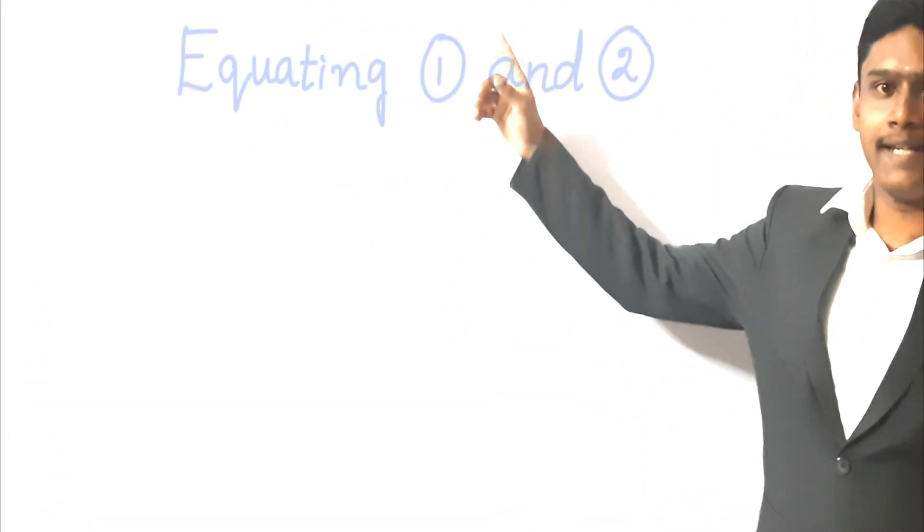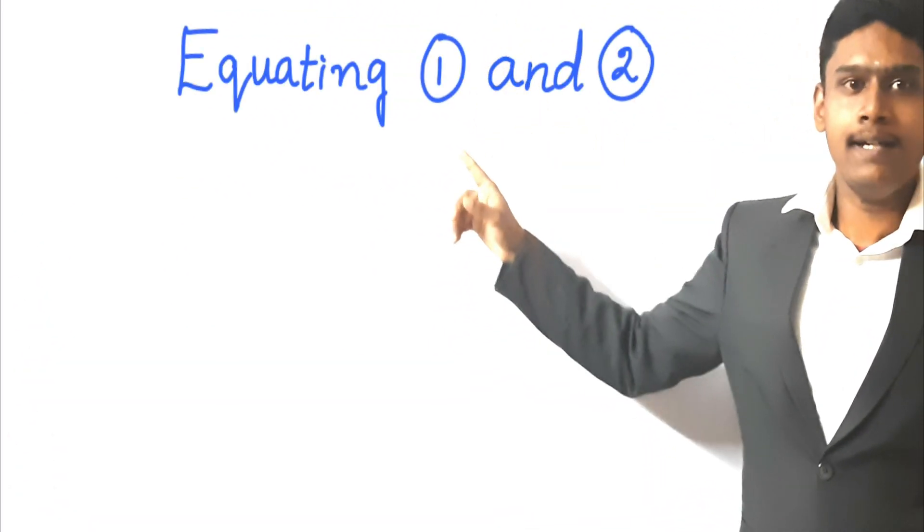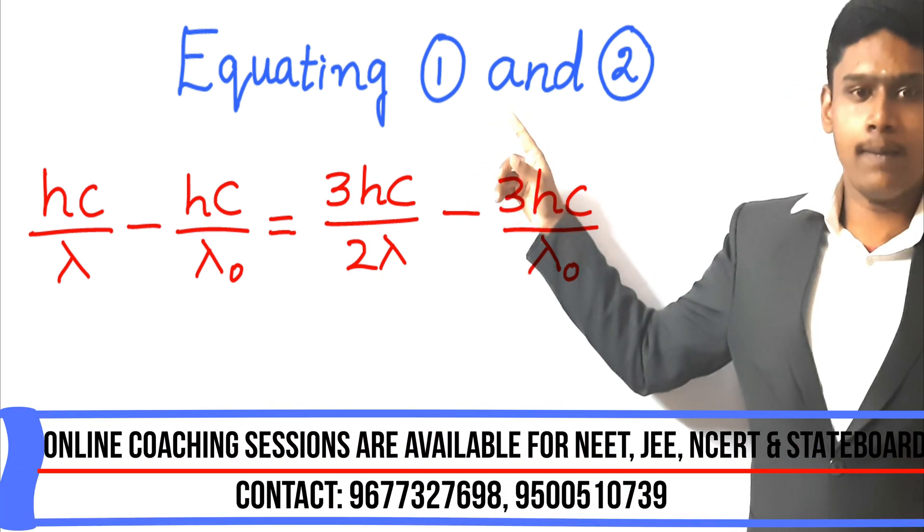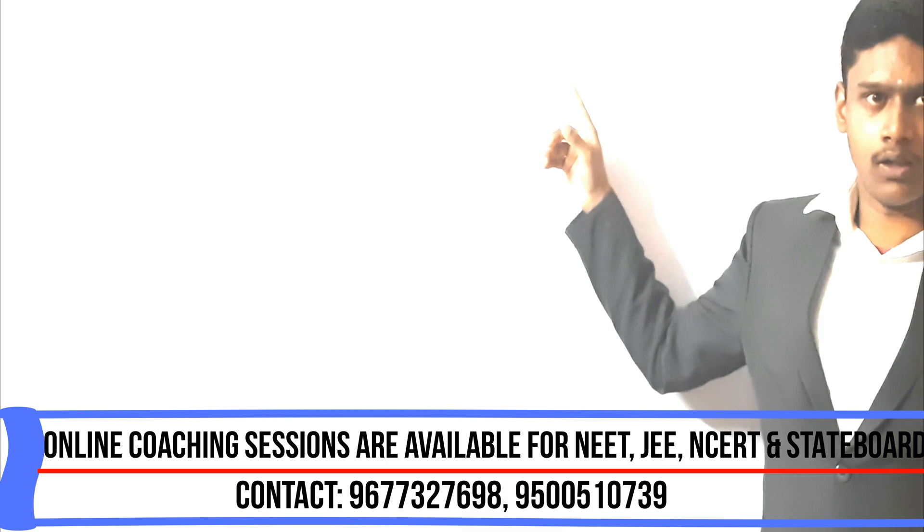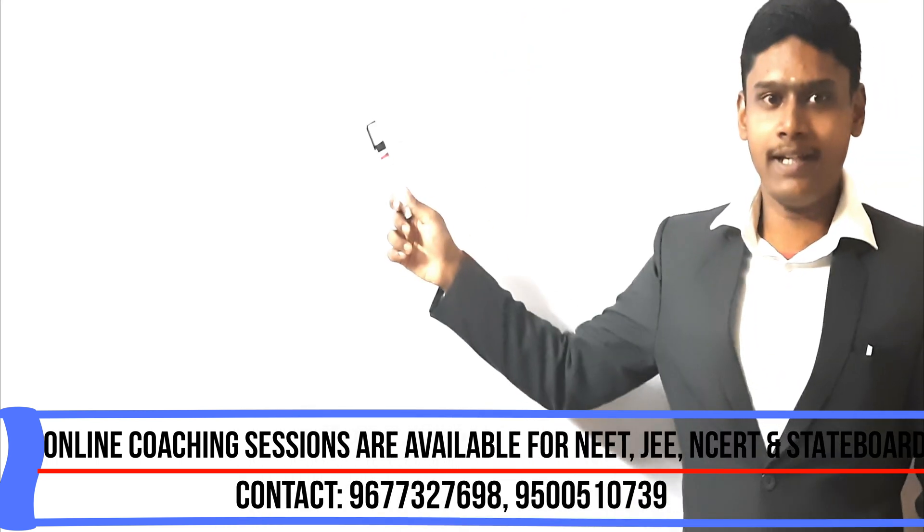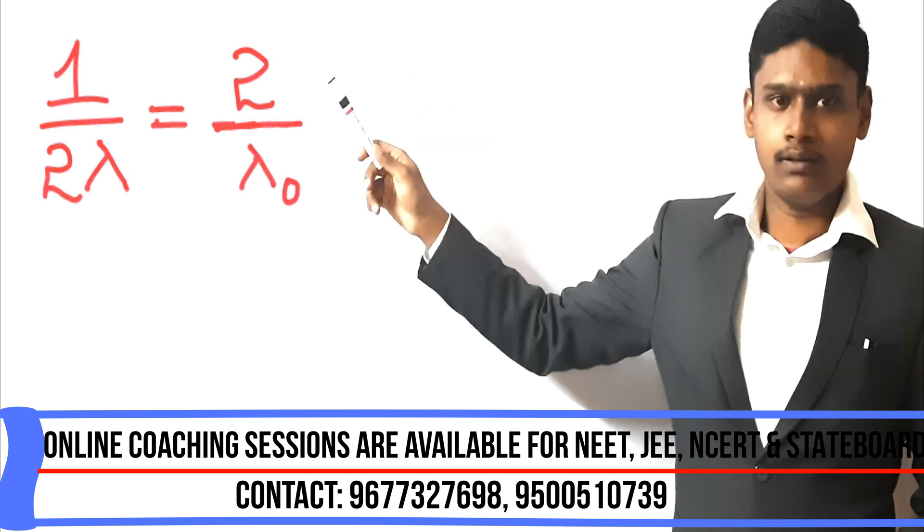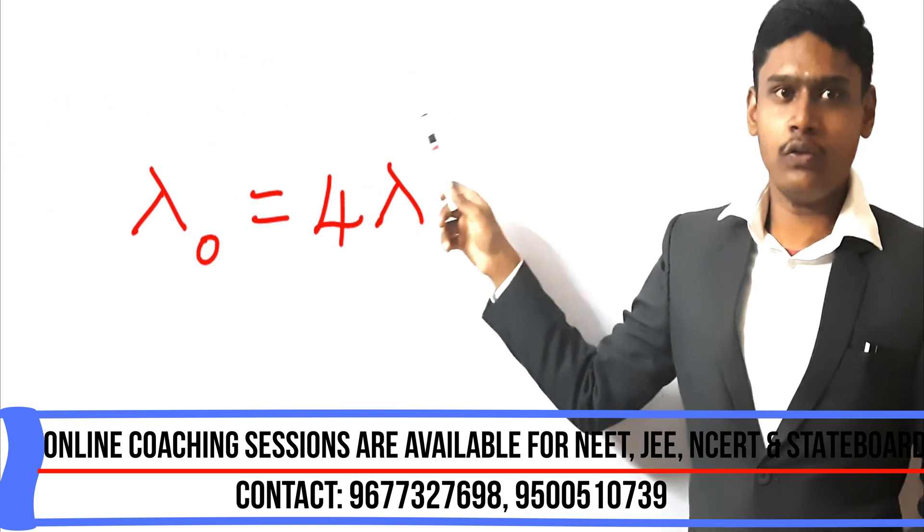On equating equation 1 and 2, we will get hc by lambda minus hc by lambda 0 which is equal to 3hc by 2 lambda minus 3hc by lambda 0. On simplifying, we will get 1 by 2 lambda which is equal to 2 by lambda 0. Therefore, lambda 0 is equal to 4 lambda.